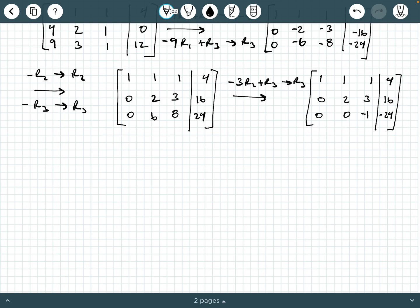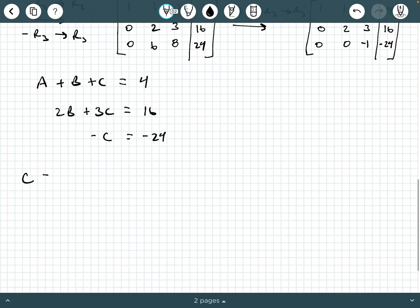So I'm just going to put this back into equation form and call this A + B + C = 4. And then 2B + 3C = 16. And then I have -C = -24. So clearly here C equals 24.